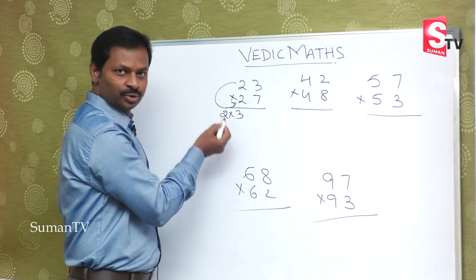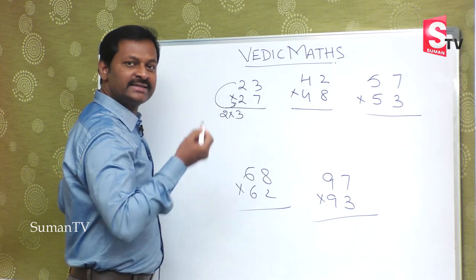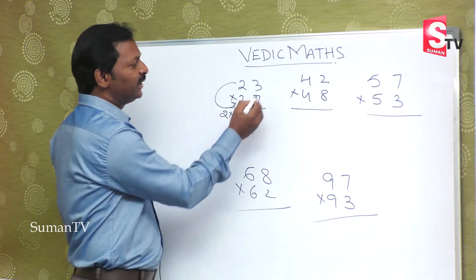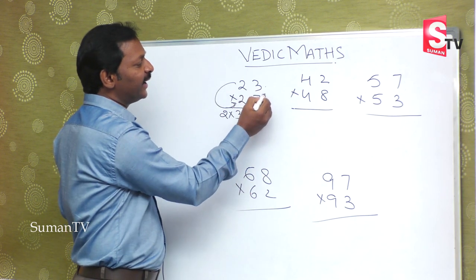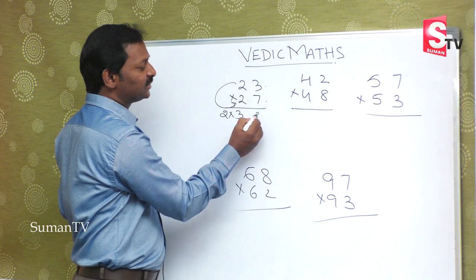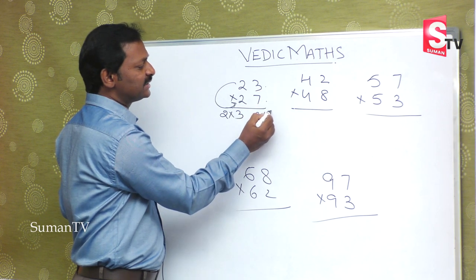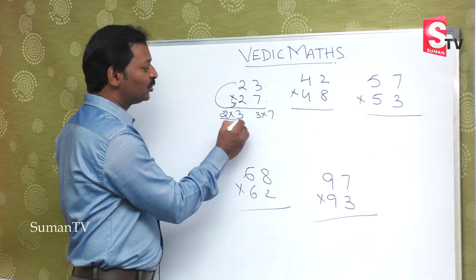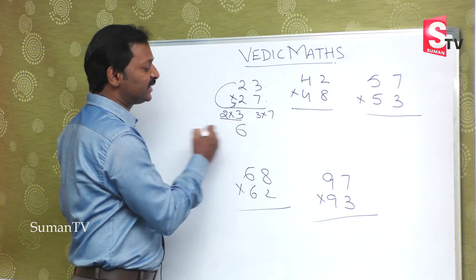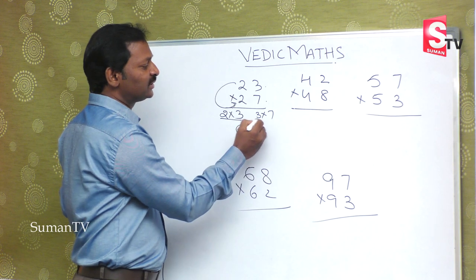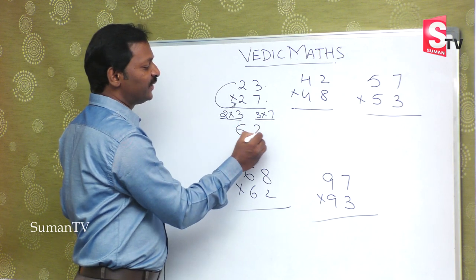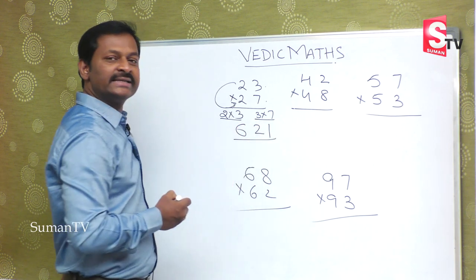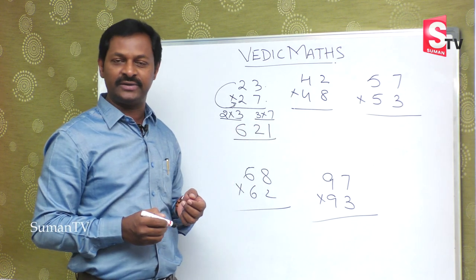So the first number is 2, then the next number is 3. This is the direct multiplication. For 23 multiplied by 27: 2 into 3 is 6, and 3 into 7 is 21. The answer is 621.